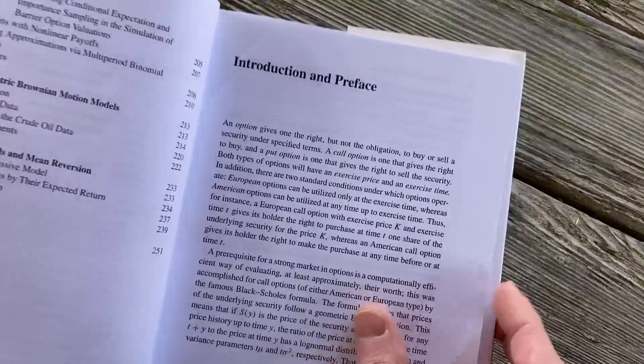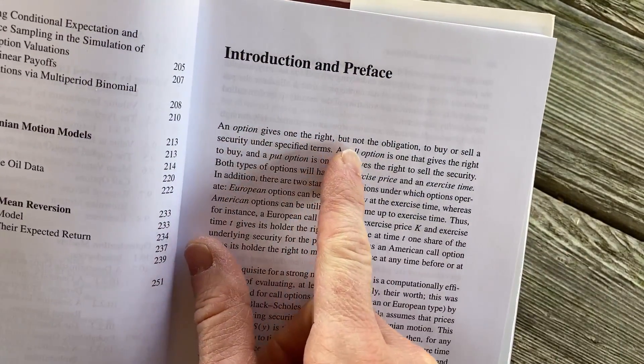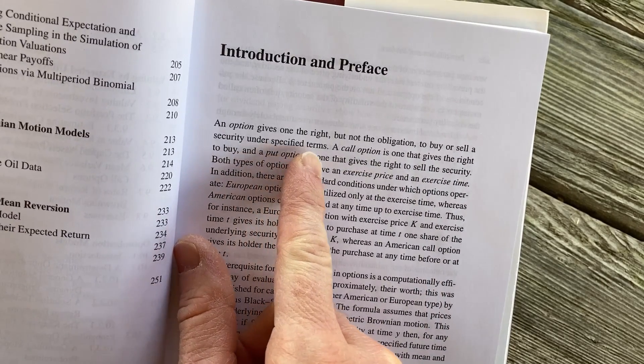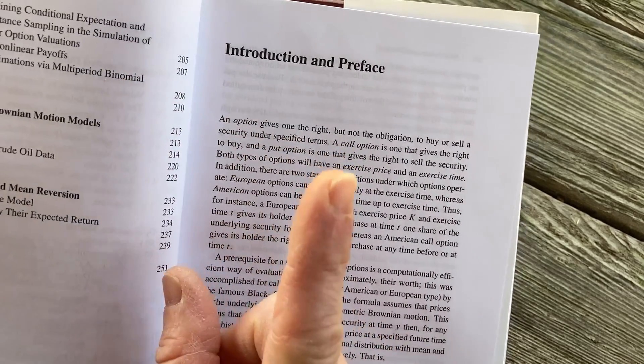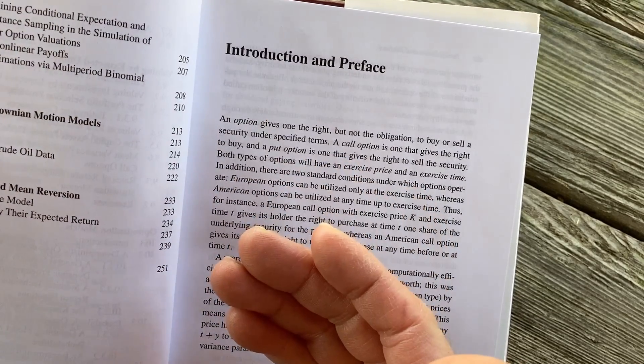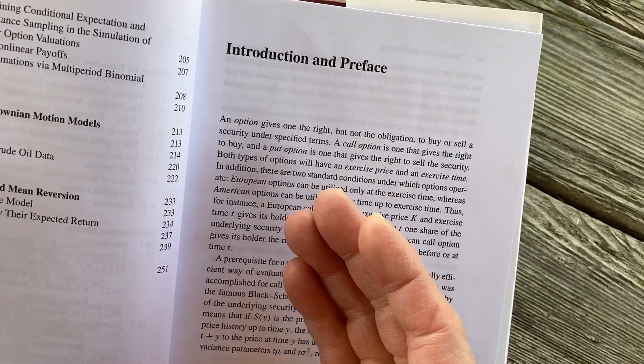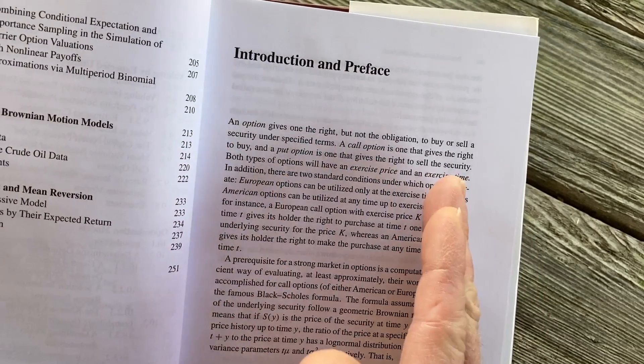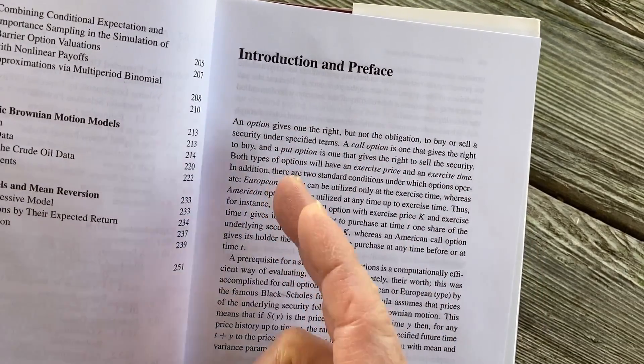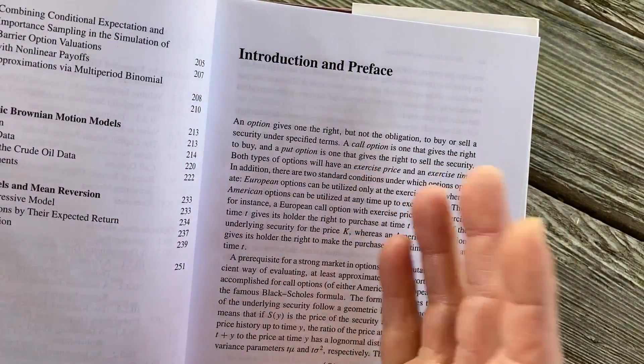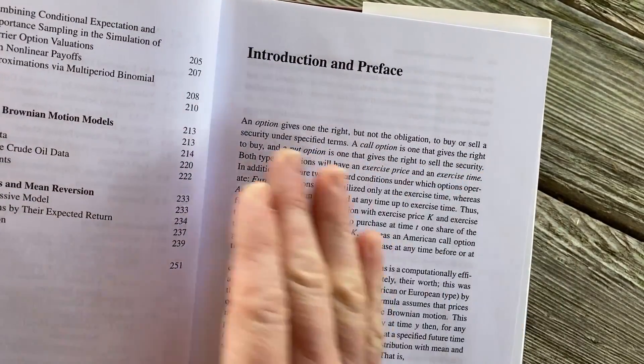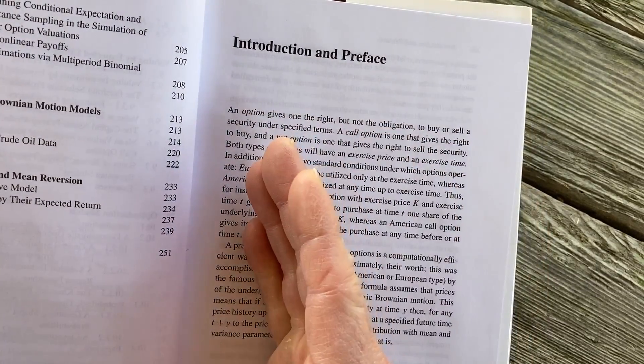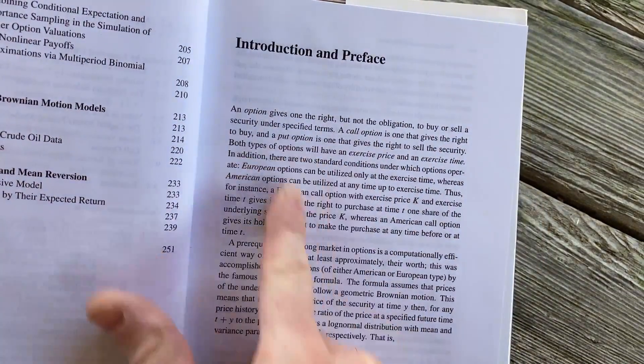Here it gives you a little preface. It says an option gives one the right, but not the obligation to buy or sell a security under specified terms. So for stocks, usually one option will give the buyer the right to buy or sell 100 shares of a stock. That's how it works for stocks. For futures, it's very similar, except it's one contract. I don't know if that's as common. People don't usually trade those as much. Most people trade stock options. And there's two kinds of options. There's European and American, but that's, well, here it talks about it. Let's keep reading.